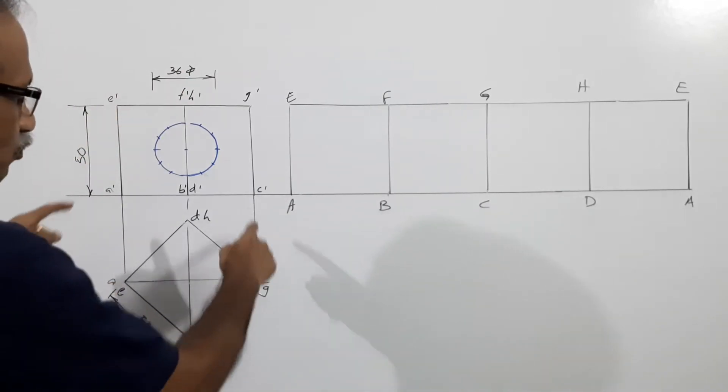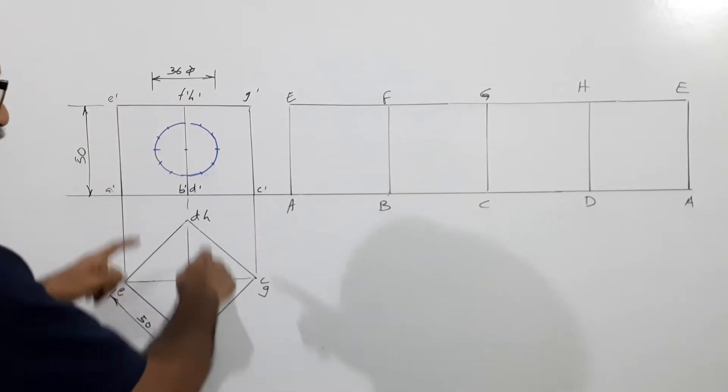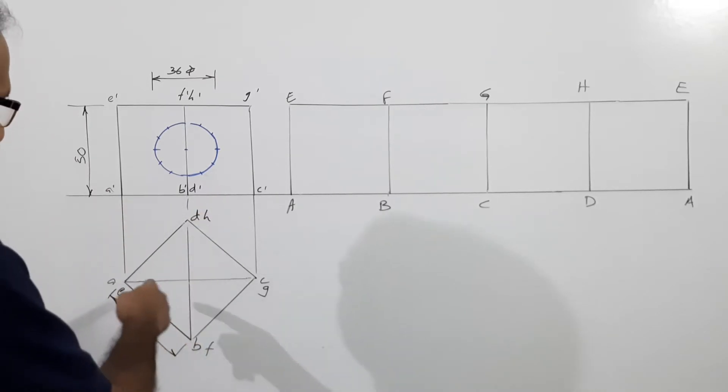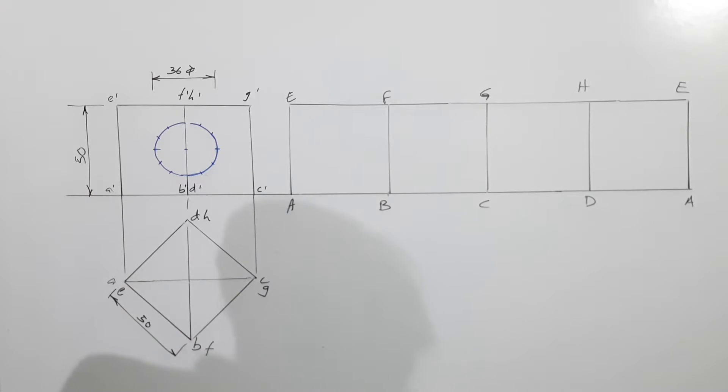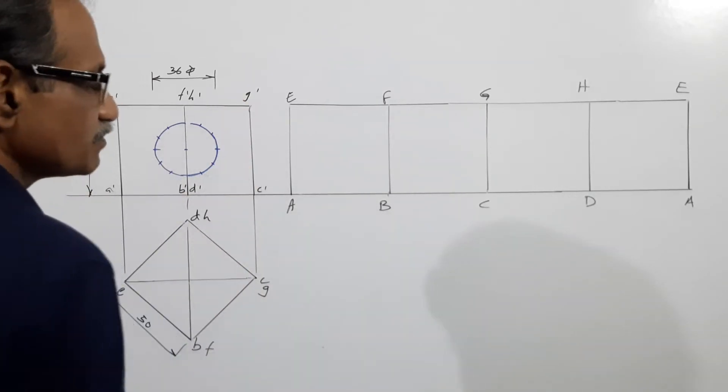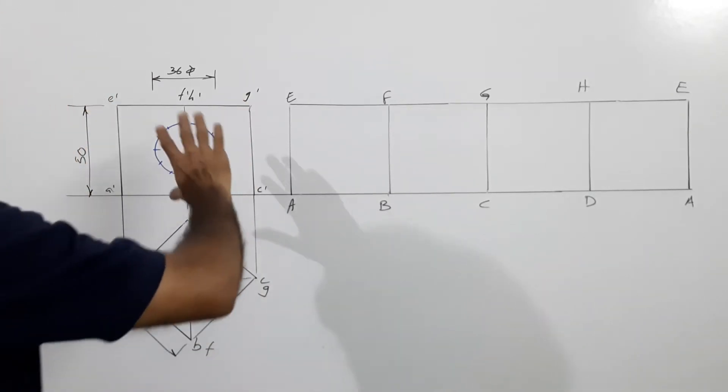Let's consider the plan. This is the plan of the cube with all lateral faces equally inclined to VP. The side is 50mm, so we draw the square. Draw the elevation which is a rectangle.